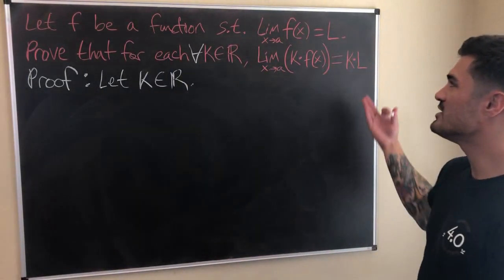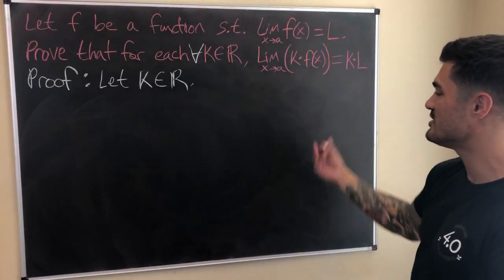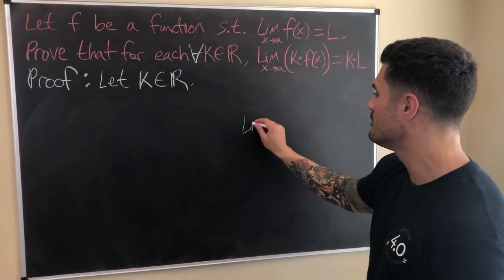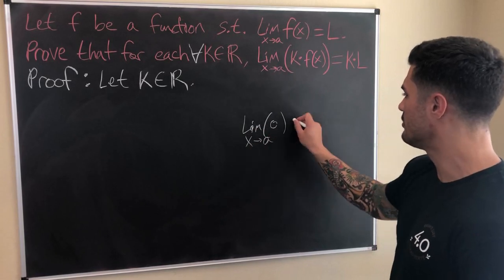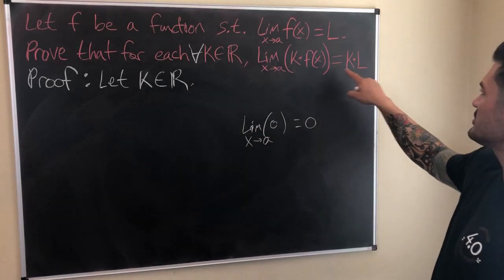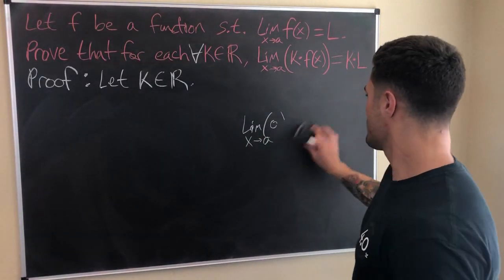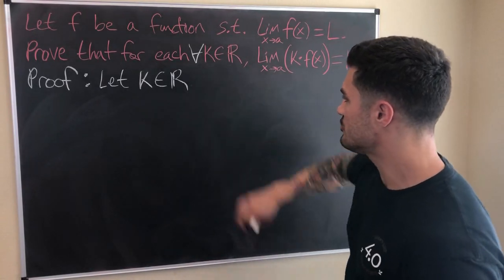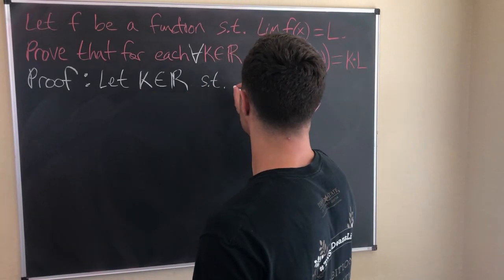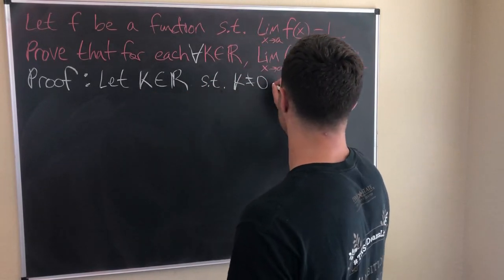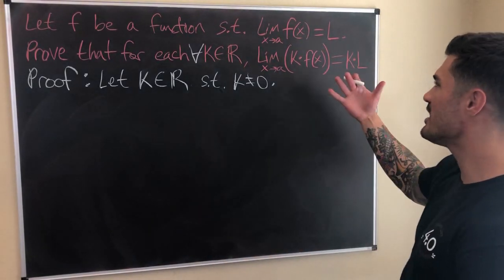The first thing that jumps out is: what if k is zero? When k is zero, this is already done for us — zero times anything is zero, so we have the limit of zero, which equals zero as x approaches anything. That lines up. So we can handle k equals zero separately and then suppose k is a real number such that k is not zero. This will make our life a little easier, and you'll see why once we get to the end of the proof.